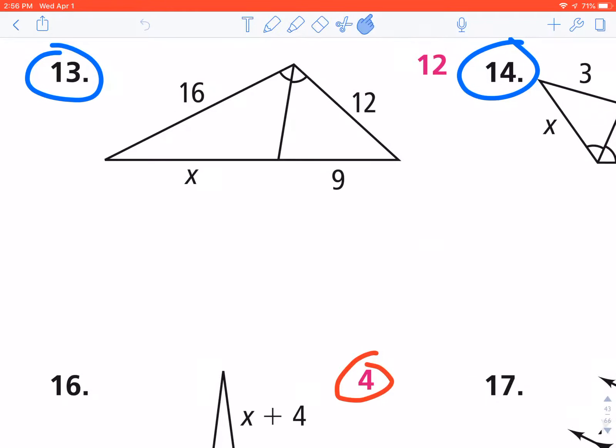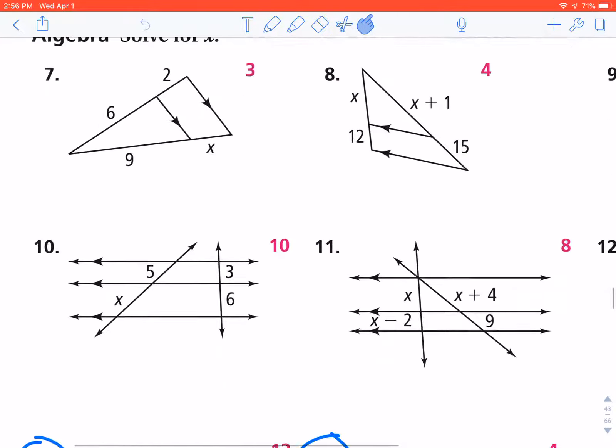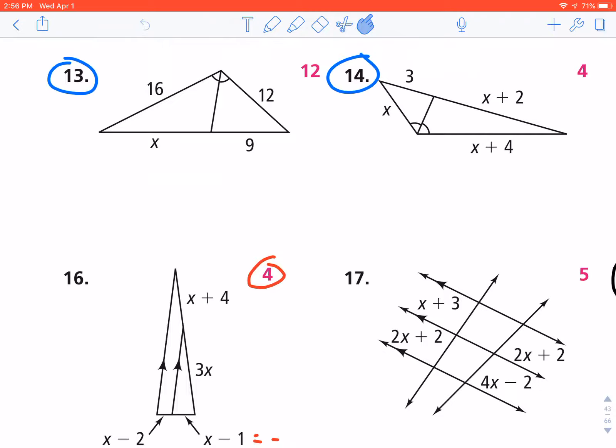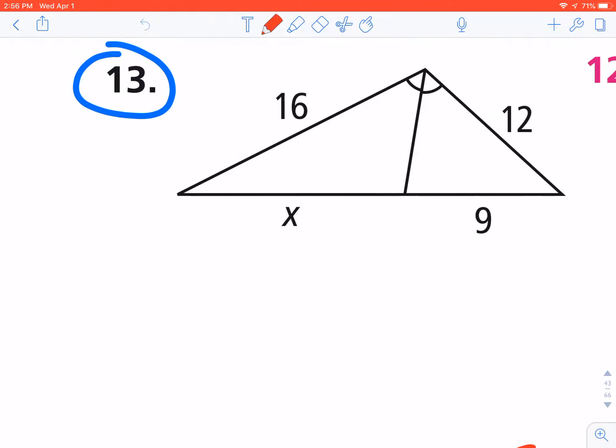Alright, for this I'm on worksheet 7.5 Form G and I'm going to do numbers 13 and 14 in this video. If we take a look at number 13 first, there's four different ways to set up your proportion. It doesn't matter which option you choose as long as you're consistent.